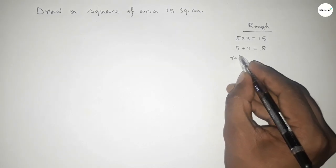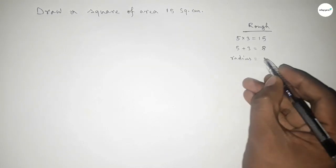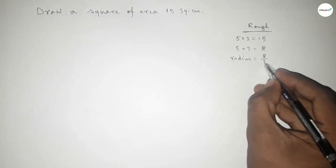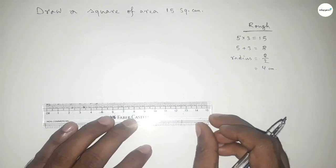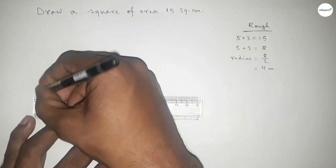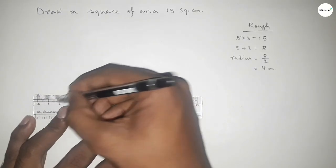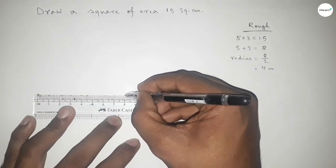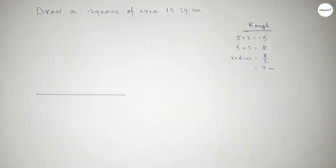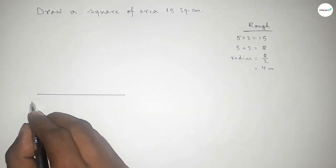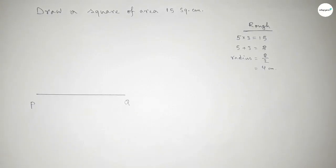So we have to draw a semicircle with diameter 8 centimeters, so radius equal to 4 centimeters. First, drawing here a line of length 8 centimeters, taking this as P and Q, so PQ equal to 8 centimeters.